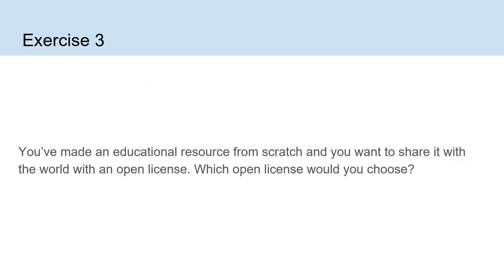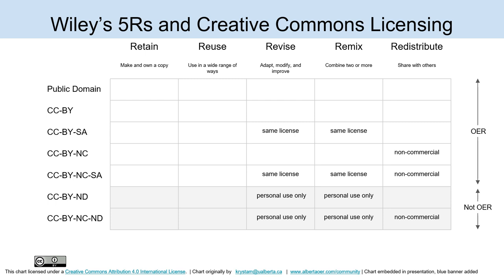It's possibly useful to reflect on those open licenses and think about what they do and what they mean. This is the third and last exercise I do in my live workshop — something for you to ponder: think about a situation where you've made an educational resource from scratch and want to share it with an open license. Which open license would you choose? Would it be different if it was something small like a photo or lesson plan versus something you spent a lot of time on like an open textbook? Would it allow all of Wiley's Five R's — retain, reuse, revise, remix, redistribute — or maybe something more restricted like a share-alike or non-commercial license?